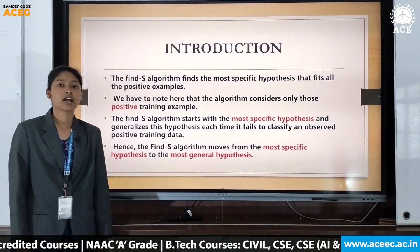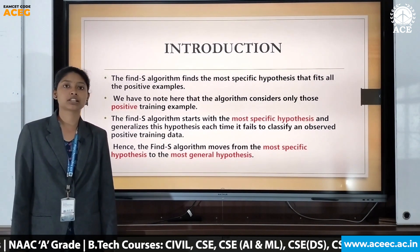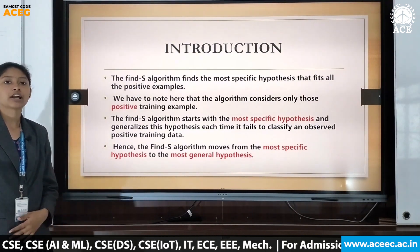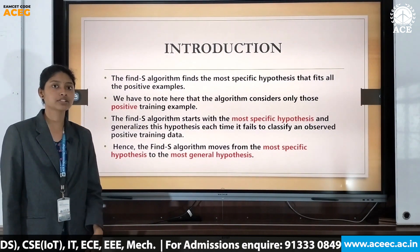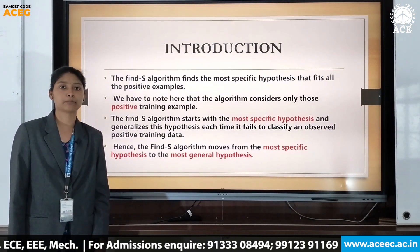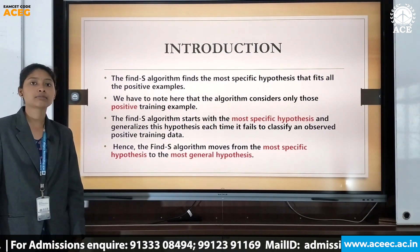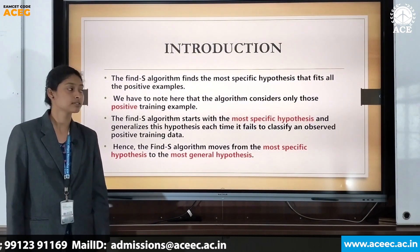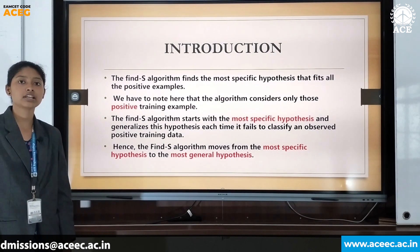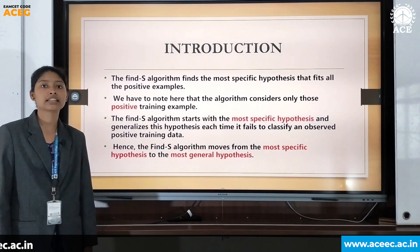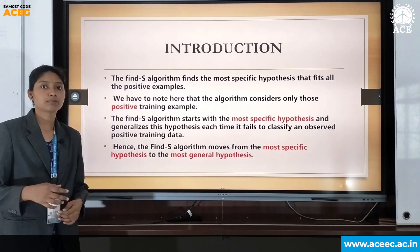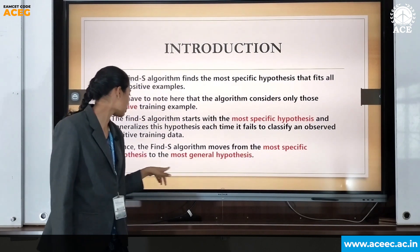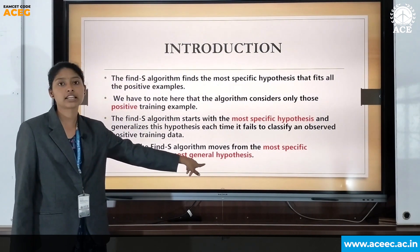Find S is the basic concept learning algorithm in machine learning. The Find S algorithm finds the most specific hypothesis which fits the positive training examples. It takes only the positive training examples and neglects the negative examples. Find S starts with the most specific hypothesis and then generalizes to each positive example, moving from the most specific hypothesis to the most generalized hypothesis.